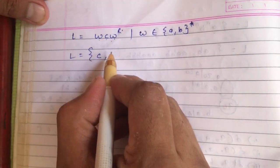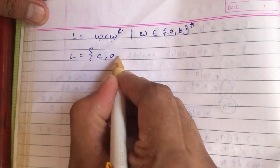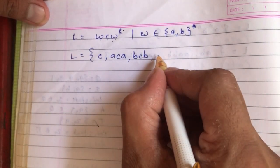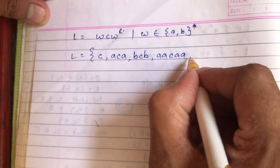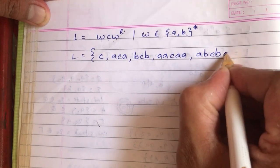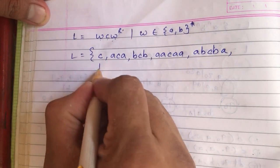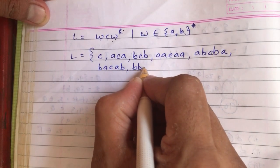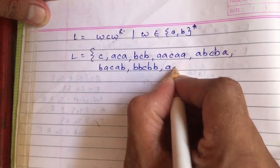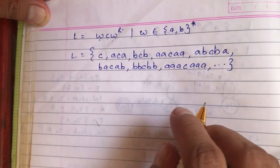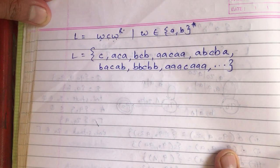When w is 'a', w-reverse is also 'a', so the string generated is 'aca'. If w is 'b', the string is 'bcb'. When w is 'aa', the string is 'aacaa'. When w is 'ab', the string is 'abcba'. When w is 'ba', the string is 'bacab'. When w is 'bb', the string is 'bbcbb'. Next will be 'aaacaaa' and so on. The first component w represents any combination of a's and b's, followed by c, then w-reverse.